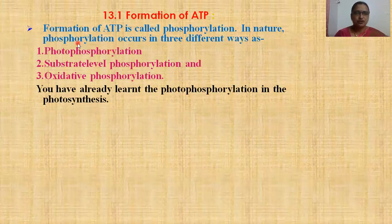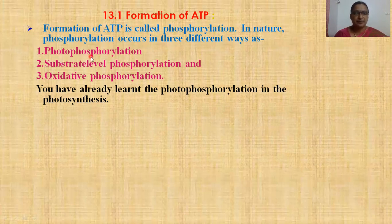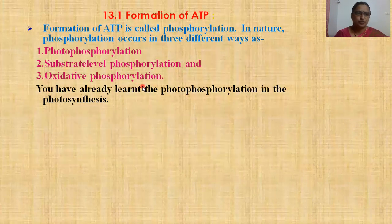In nature, phosphorylation occurs in three different ways. The first one is called photophosphorylation — photo means light, and phosphorylation means formation of ATP. This process is called photosynthesis. The second one is called substrate-level phosphorylation, and the third one is called oxidative phosphorylation.